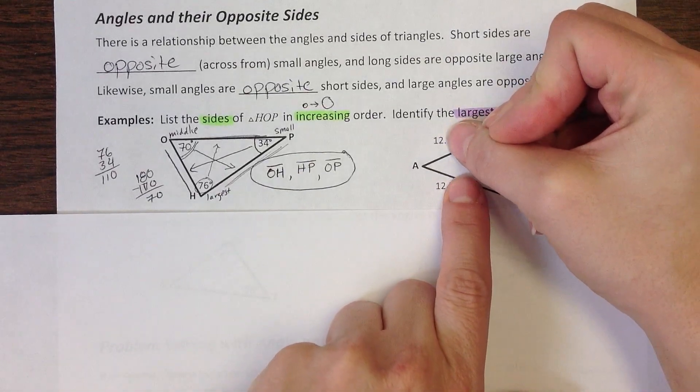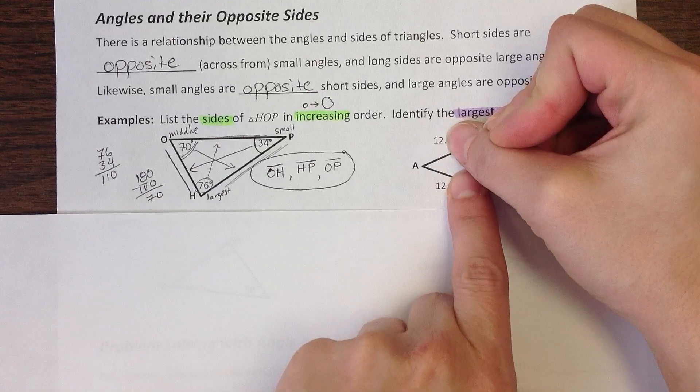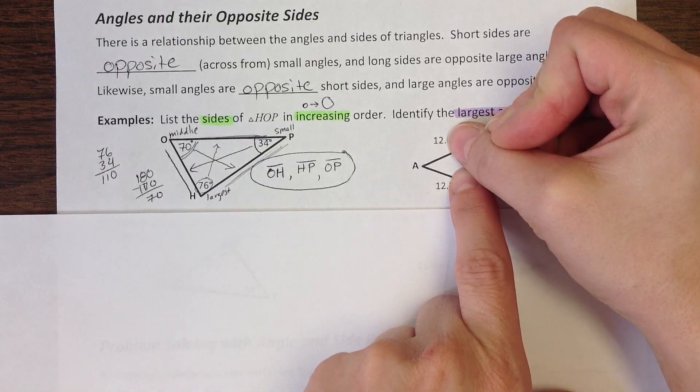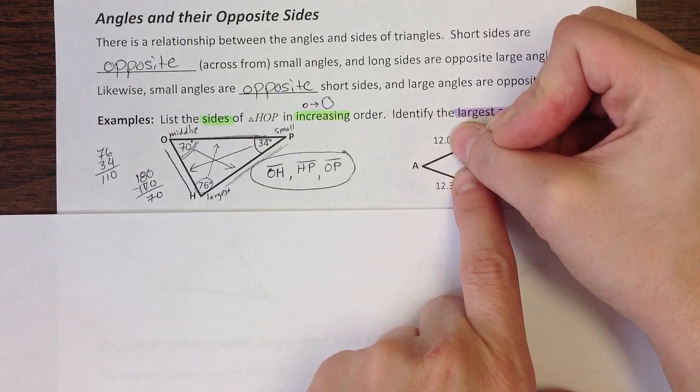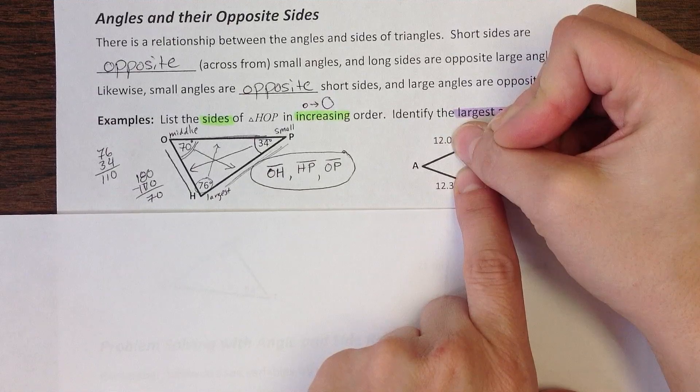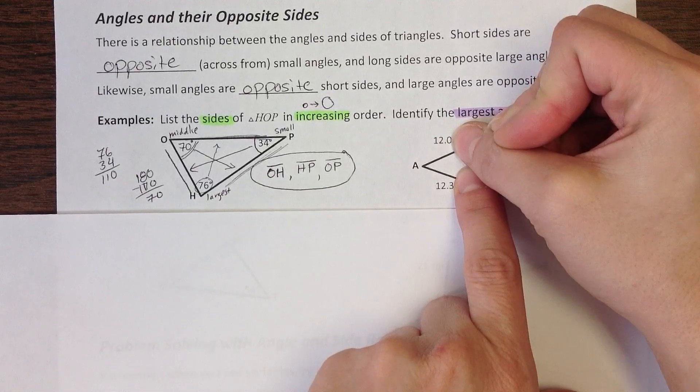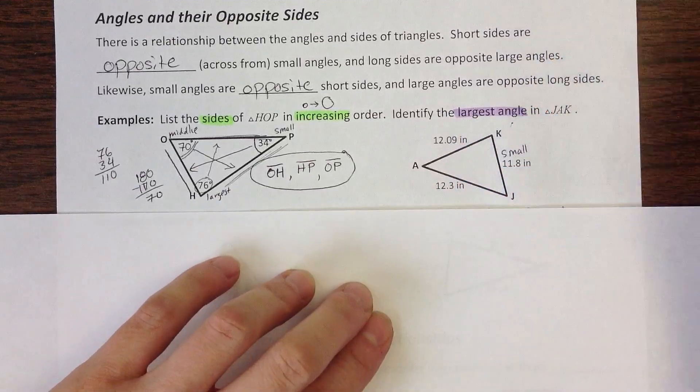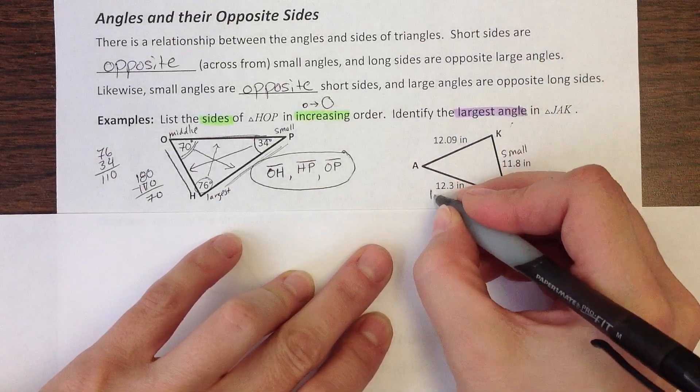Okay, if I look at these two, they're both a little bigger than 12. So to decide which one is smaller or bigger, I'm going to go to the tenths place. So I'm not looking any further than the tenths place right now. And I won't need to look any further because I can make my decision right now. 12.0 is smaller than 12.3. So 12 and 3 tenths is going to be my longest side.